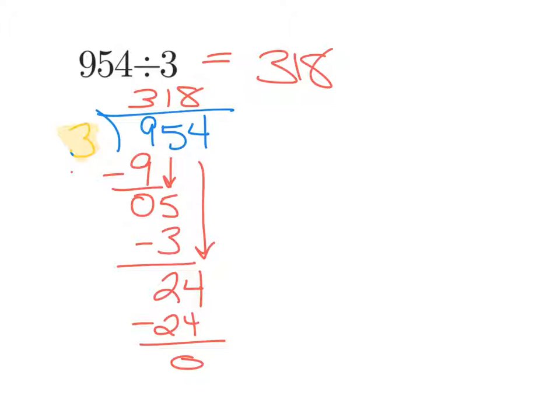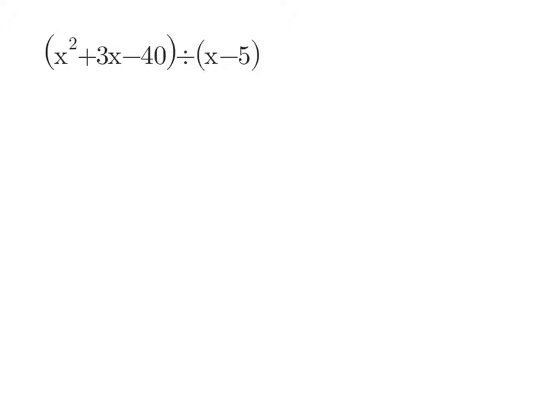That's going to be the similar process that we'll use when we're doing long division with polynomials. When we set up long division with polynomials, we're going to still use our same long division. And it's that numerator, that x squared plus 3x minus 40 that goes inside of the division. Since we're dividing by x minus 5, that's what goes on the outside. We want to see how many times x minus 5 goes into x squared plus 3x minus 40.